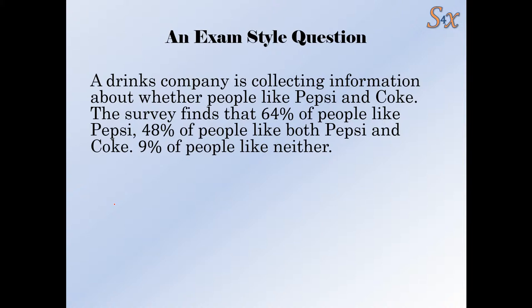This example is about Pepsi and Coke and what proportion of people like each drink and like both. Your task is to draw a Venn diagram to represent the information in the question. I've given you some probabilities, but not all of them. There's one probability missing, which we can figure out and write in the Venn diagram.